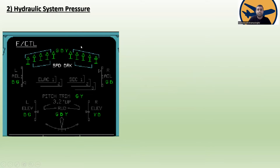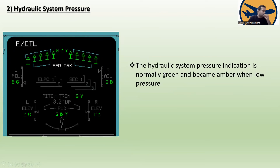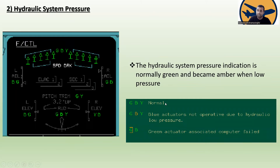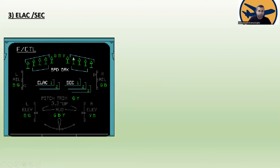Topic two is hydraulic system pressure. On the Airbus A320 family there are three hydraulic systems: green, blue, and yellow. The hydraulic system pressure indication is normally green and becomes amber when there is low pressure. If the blue actuators are not operative due to hydraulic low pressure, or if a green actuator's associated computer has failed, specific symbols will be displayed.